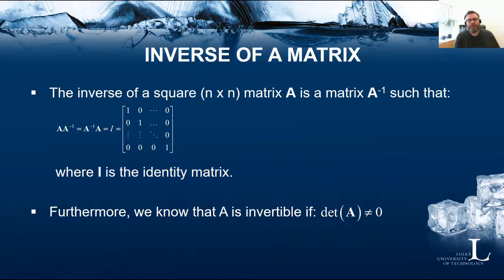Inverse of a matrix is usually a little bit more tricky to remember from the linear algebra course. The inverse of a square matrix, matrix A, is the matrix A minus 1, such that if we multiply these together, we get the identity matrix. The identity matrix has 1s on the diagonal and 0s everywhere else.